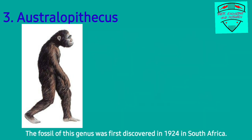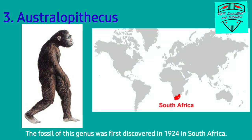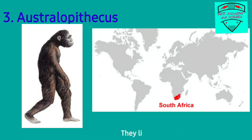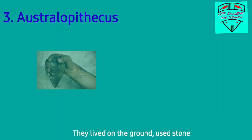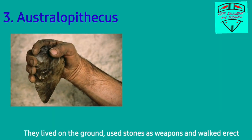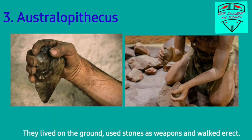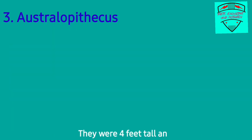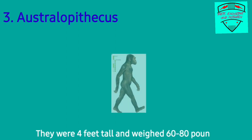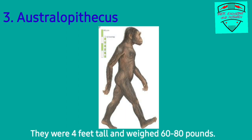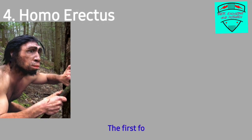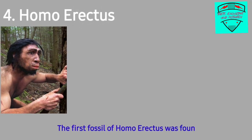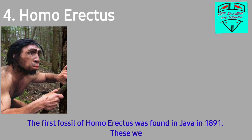The third stage is Australopithecus. The fossil of this genus was first discovered in 1924 in South Africa. They lived on the ground, used stones as weapons, and walked erect. They were four feet tall and weighed 60 to 80 pounds.